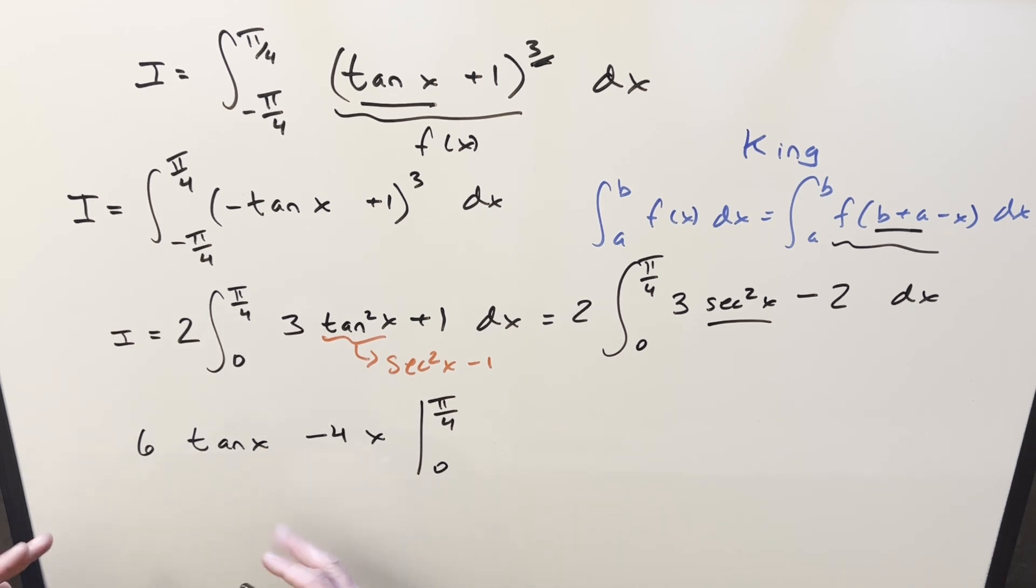When you plug 0 in, everything is going to be 0. So let's not worry too much about that. Plug in pi over 4. Tan of pi over 4 is just 1. So we have 6 minus 4 times pi over 4, minus pi. For my final solution, we have just 6 minus pi, and that's it.